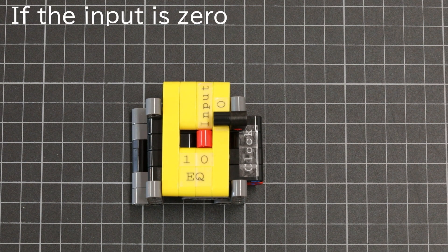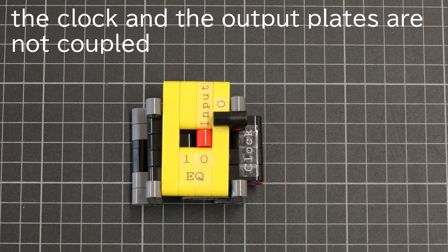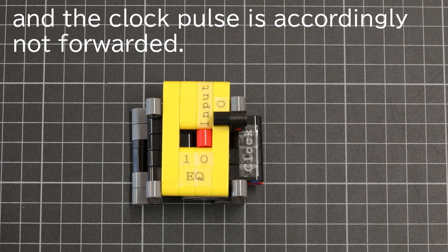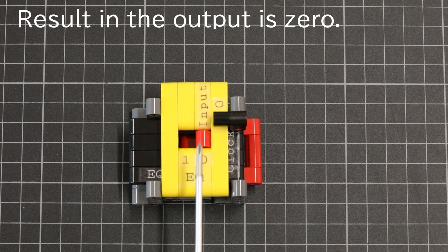If the input is 0, the input and output plates are not coupled and the clock pulse is accordingly not forwarded, resulting in the output is 0.